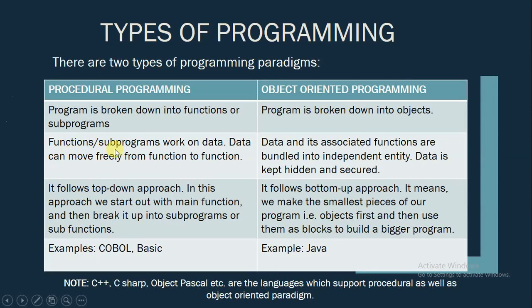Functions or subprograms in procedural programming work on data, and data can move freely from one function to another. In object oriented programming, data and its associated functions are bundled into a single entity. Data is usually kept hidden and secured.